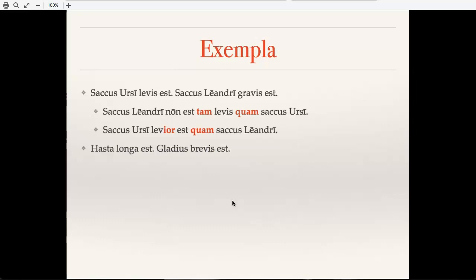Hasta longa est. Gladius brevis est. Using tam and quam, we could say gladius non est tam longus quam hasta. And using a comparative, we could say hasta longior quam gladius est.